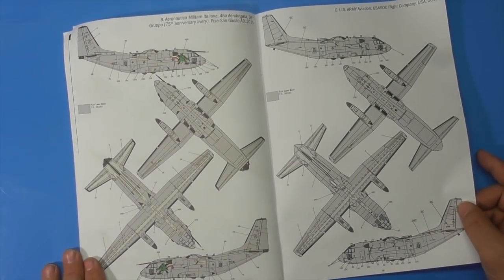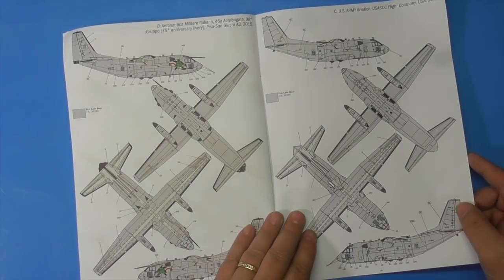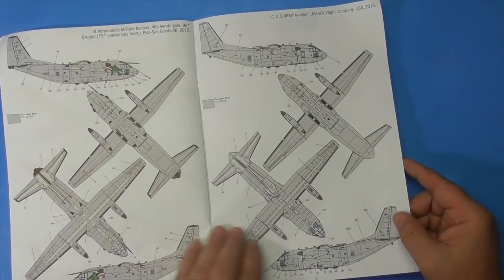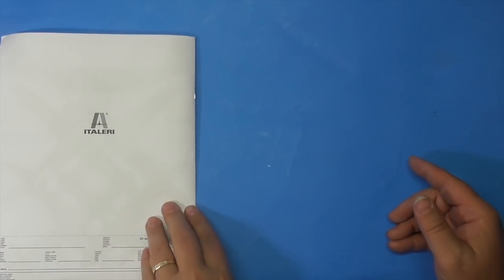And then the Italian one, flat light gray. And the Army one, flat light gray. And that's it.